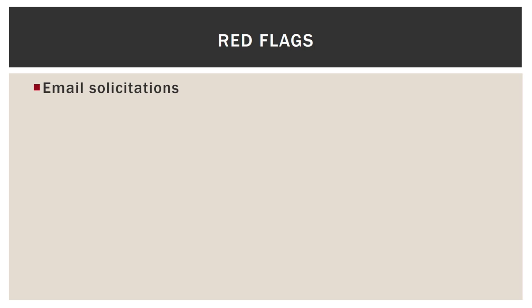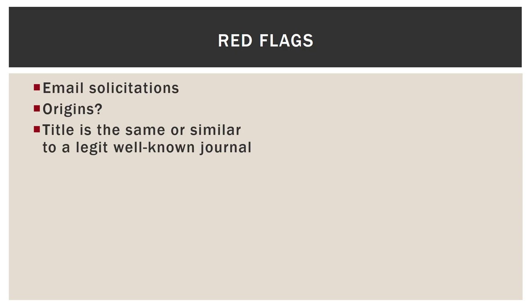Using that as the starting off point, let's look at some other red flags that could pop up during your evaluation. Email solicitations: unless you are already highly well known in your field, it is very unlikely that a journal is going to contact you first. The origins of the journal should match the title — if it claims to be international, you should see other information on the website that backs up that claim. If the title is the same or similar to a well-known legitimate journal, that is a huge red flag. If a journal is an open access title that claims to be indexed in the Directory of Open Access Journals but is not, that is also a red flag.